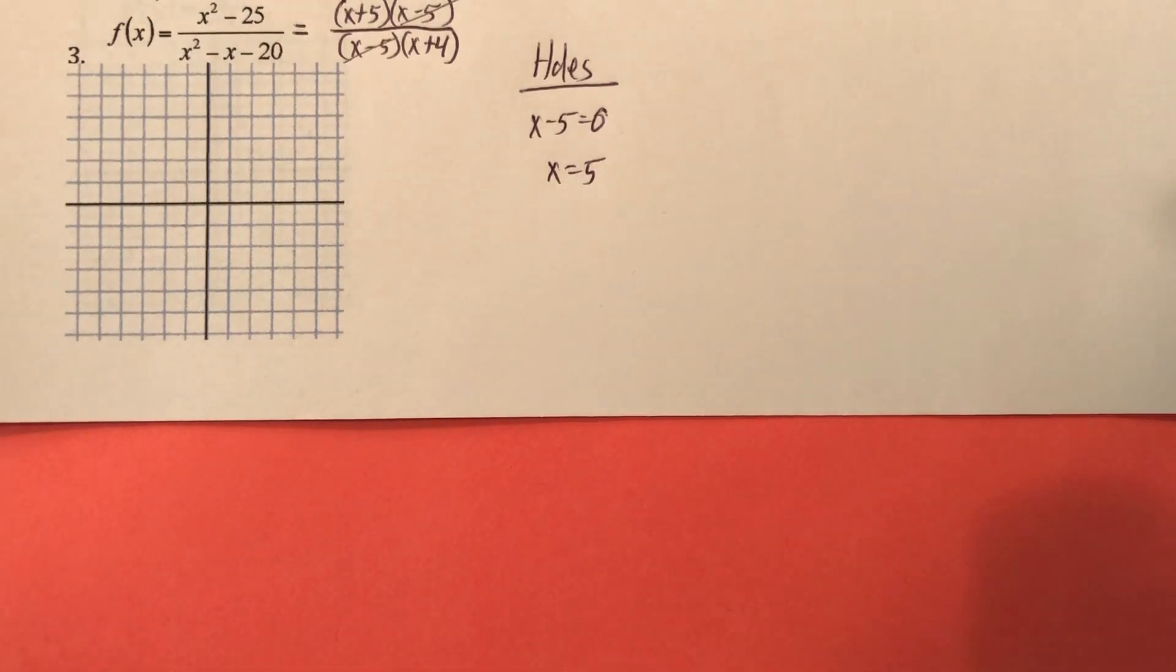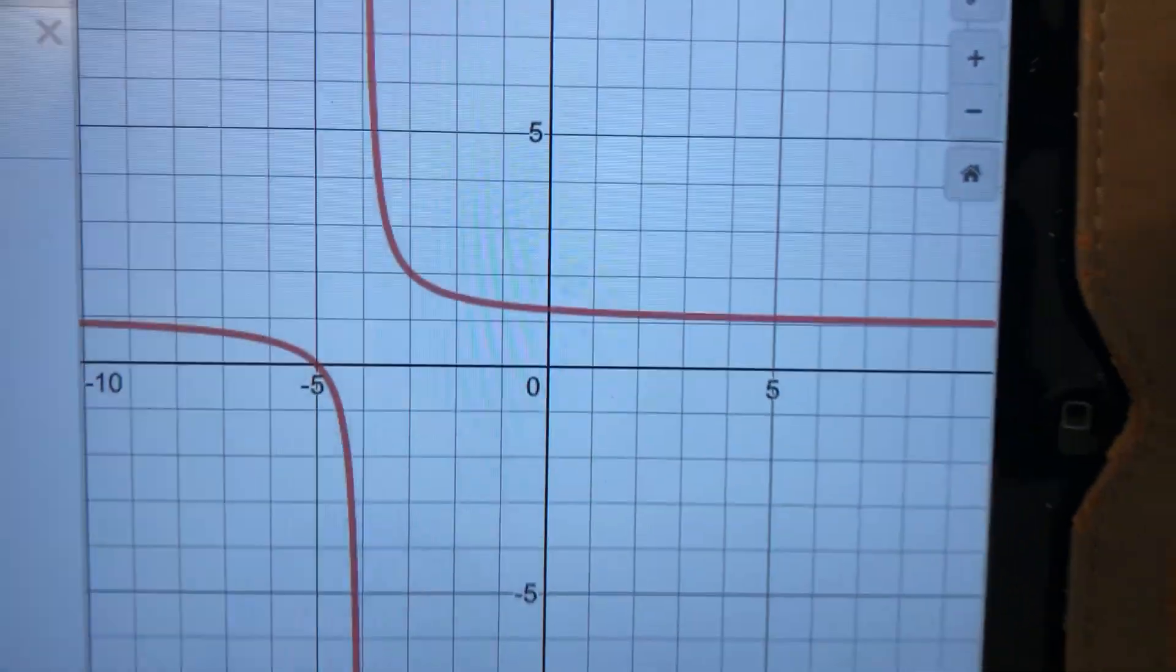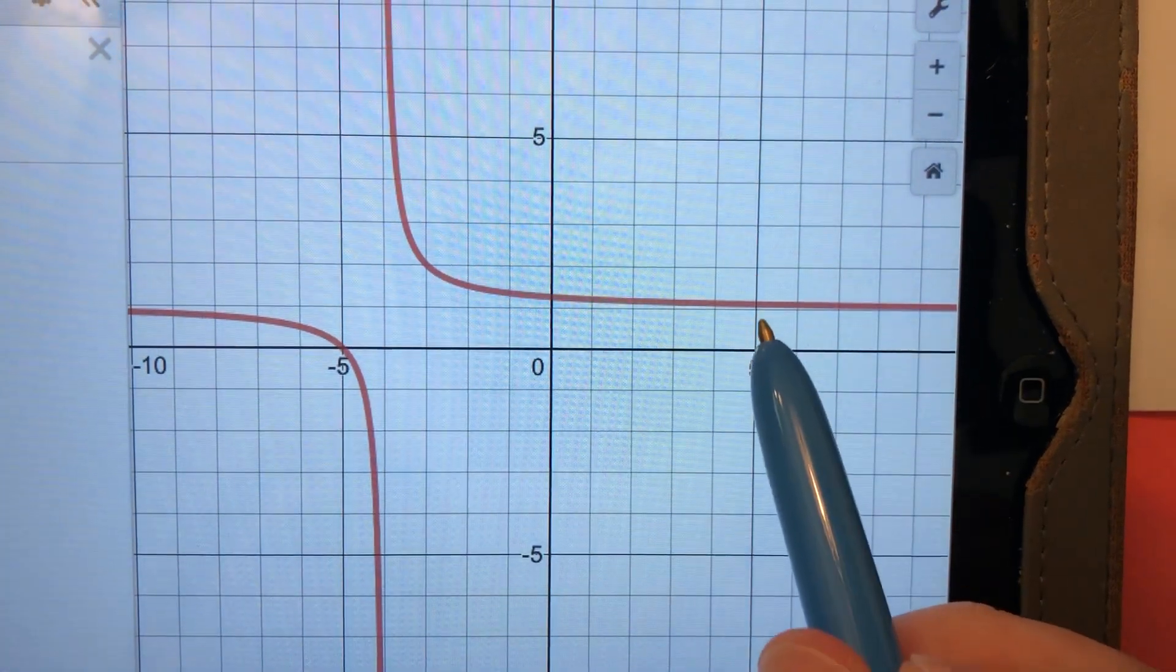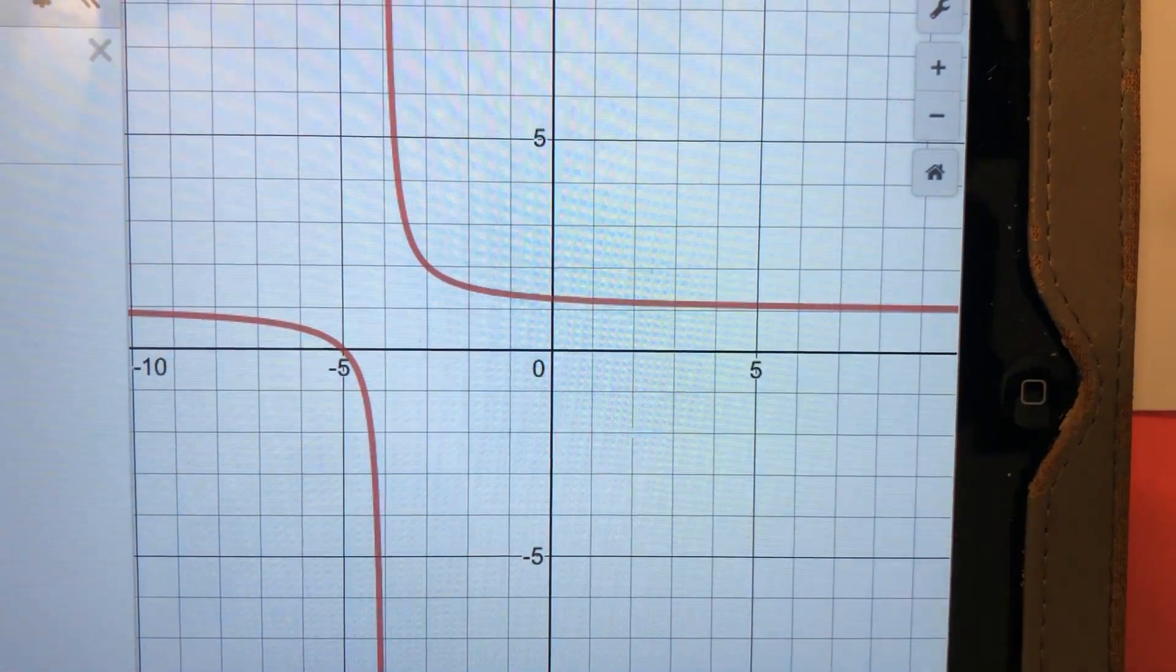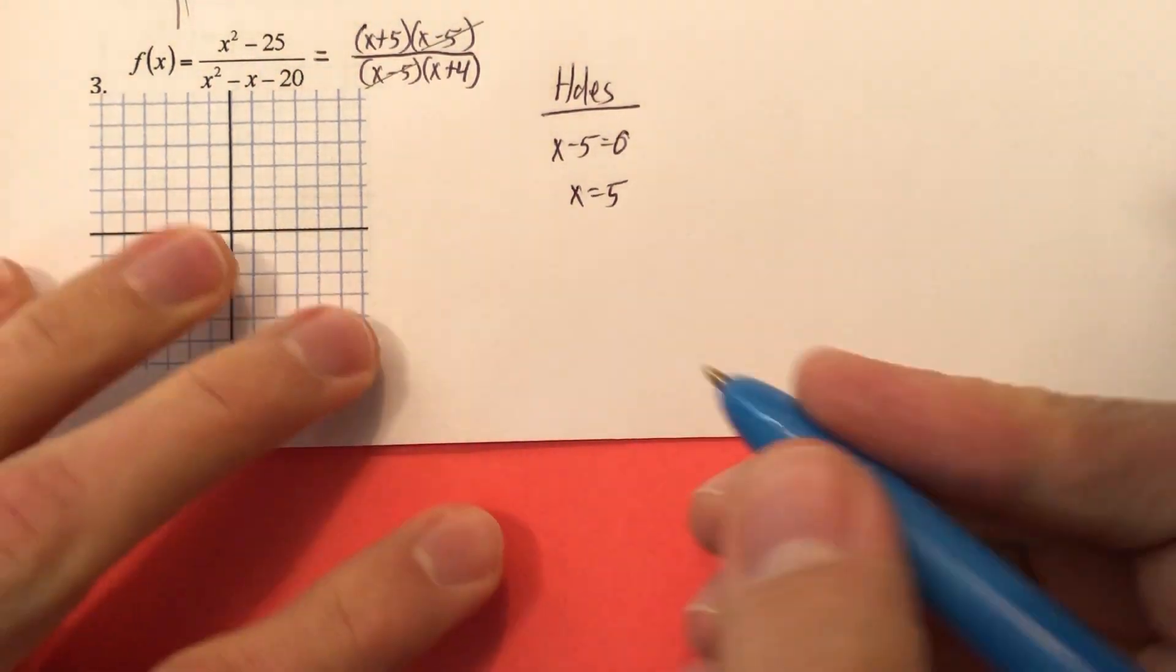By the way, again, if you were to graph this, and I will show you right now, see? You don't see a hole at X equals 5. There is a hole right there, but the resolution doesn't really show it. So we're going to have to do something about that.